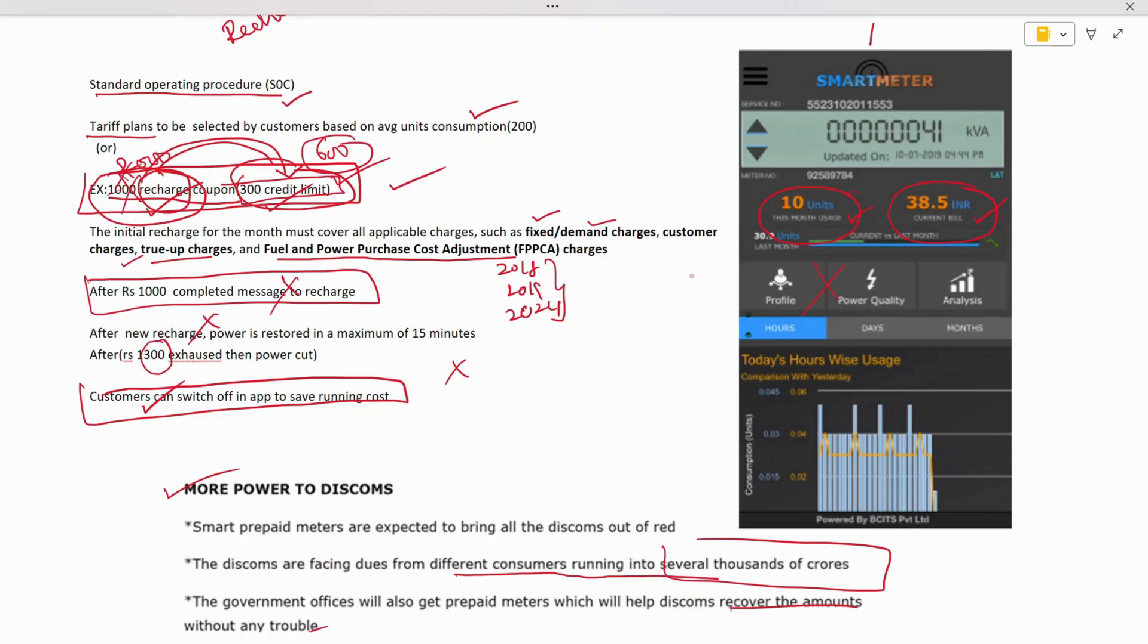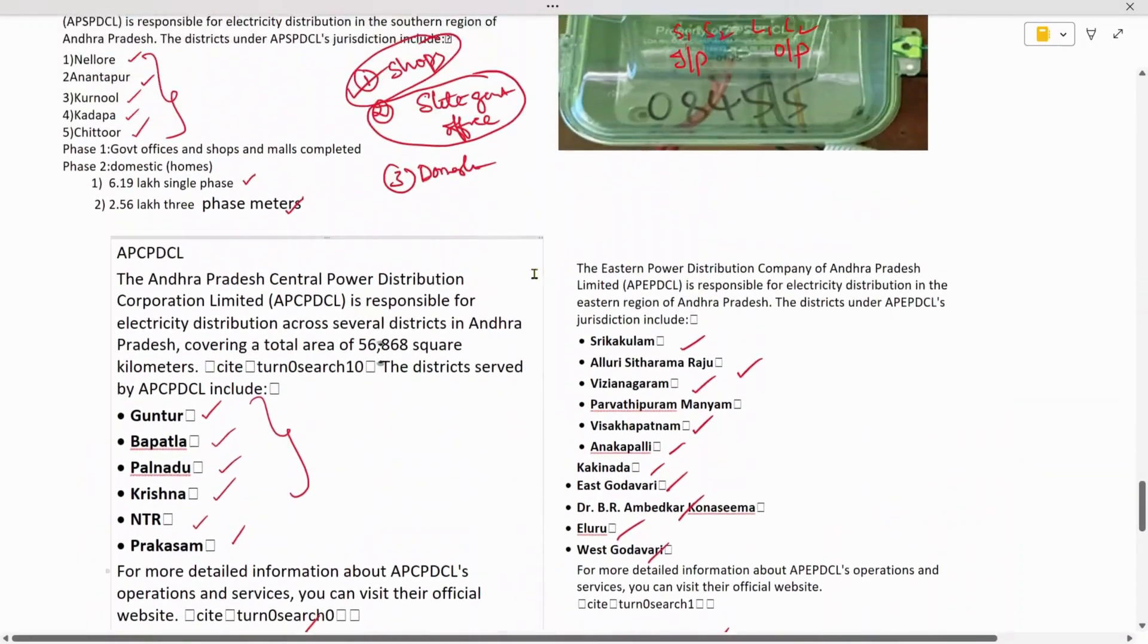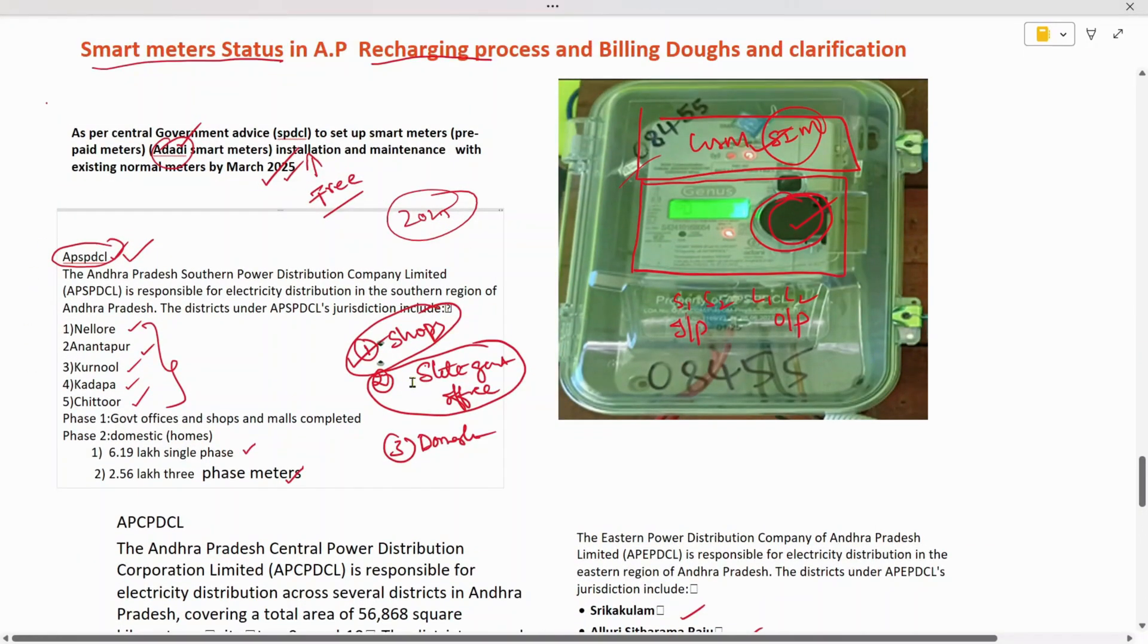The customer may struggle to overcome this, so the 300 rupee credit limit is given. As you recharge again, this 300 credit limit will be reduced from that original balance. As you recharge, power will be restored in less than 15 minutes. This is all about smart meters in Andhra Pradesh and how meters have been allotted to different distribution corporations.